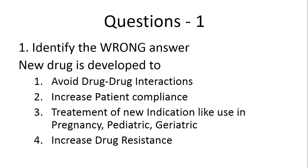In this quiz, I'm going to have five questions and discuss the answers. The first question is: identify the wrong answer related to new drug development. Options are — new drug is developed to: avoid drug-drug interactions, increase patient compliance, treatment of new indications like use in pregnancy, pediatrics and geriatric population, or increase drug resistance.